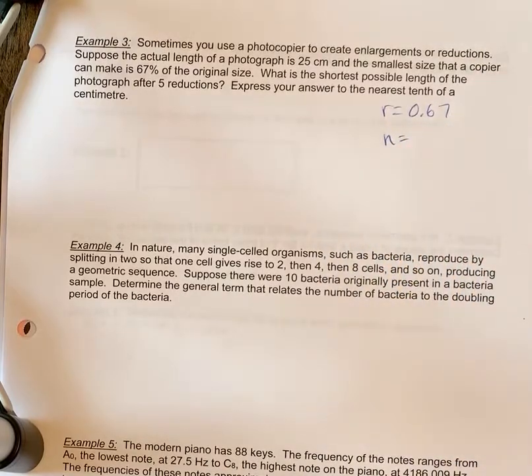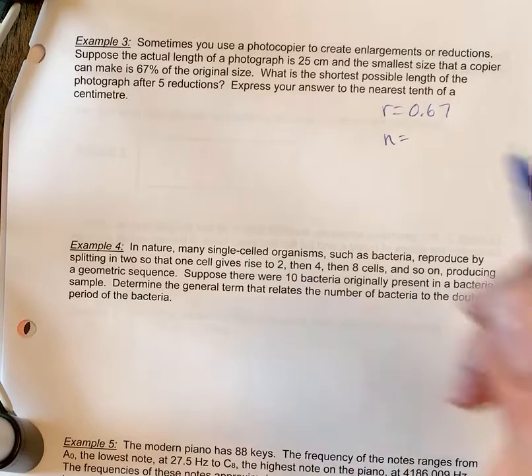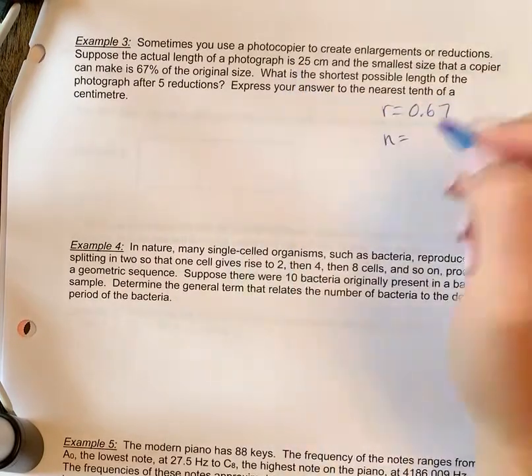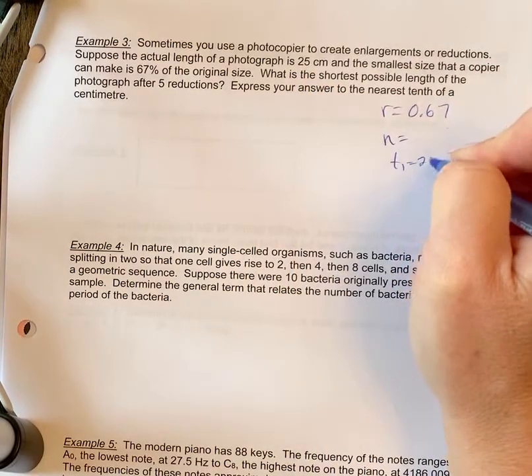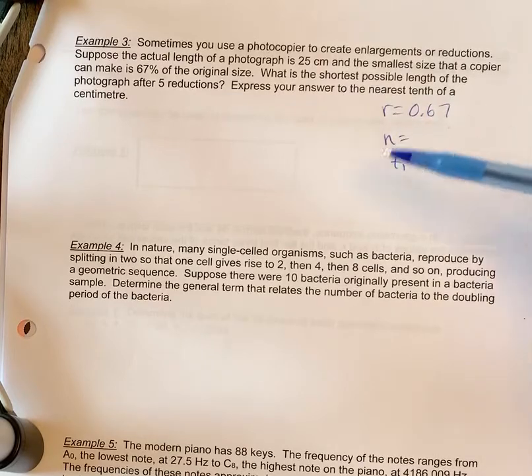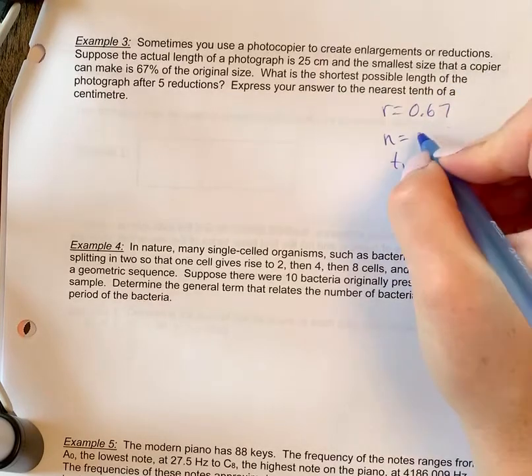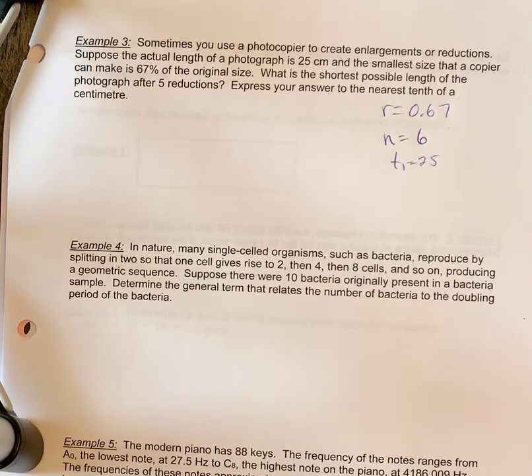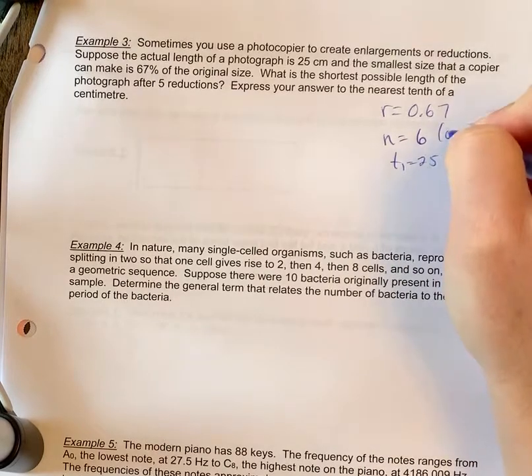Now, quick glance, you may think that the end value is five because it's after five reductions. But actually the first term would be 25, so let's write that down here as well. The first term is 25, there wasn't a change, and then you reduce it five times. So there's actually six terms in this sequence because you have your original